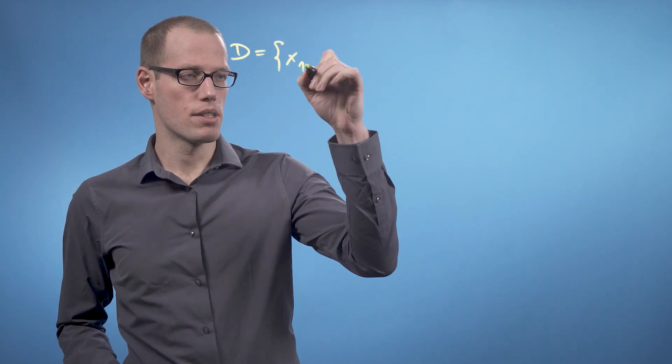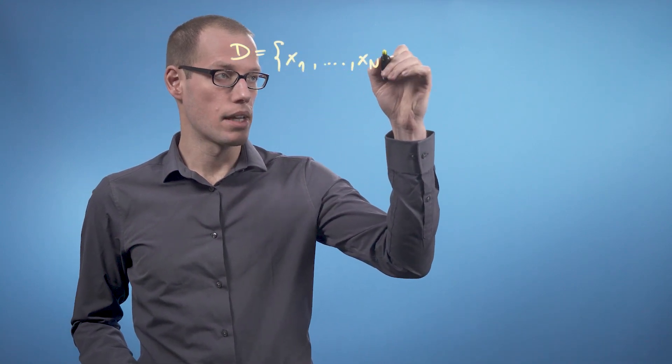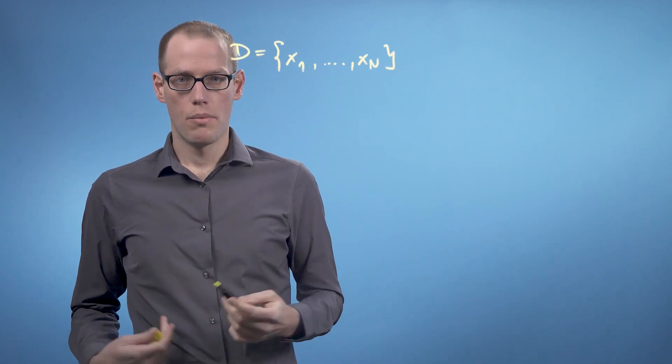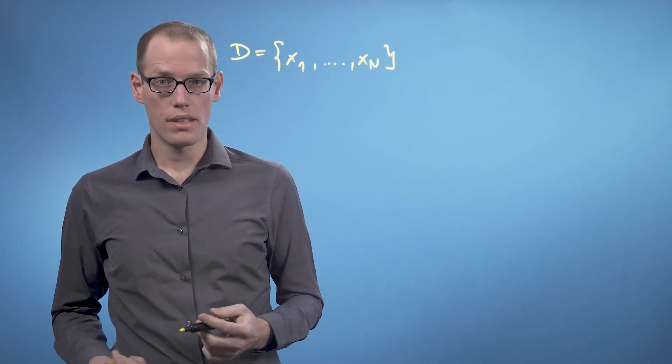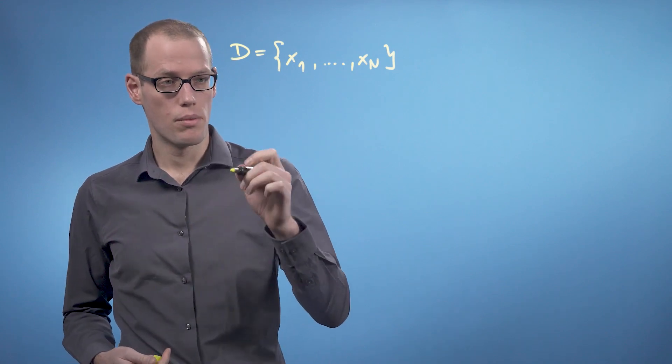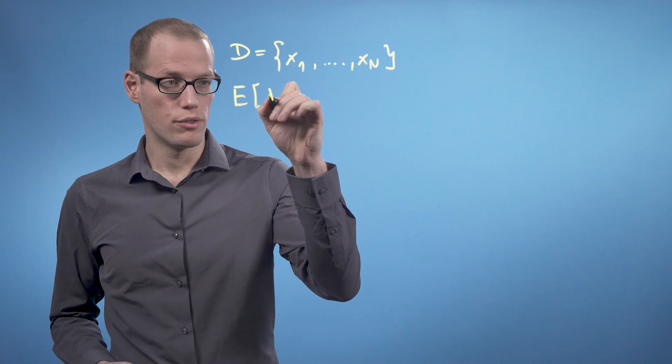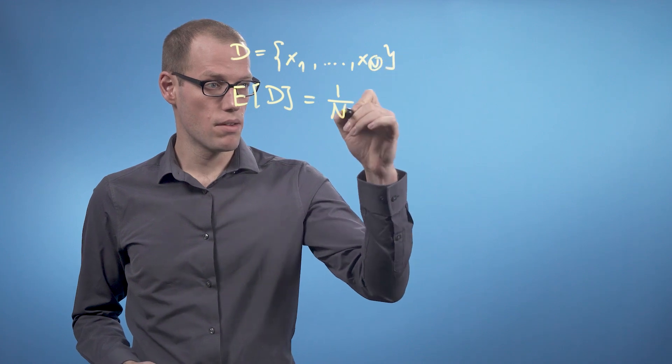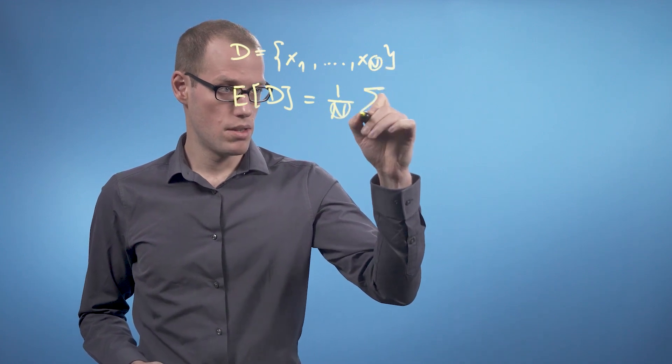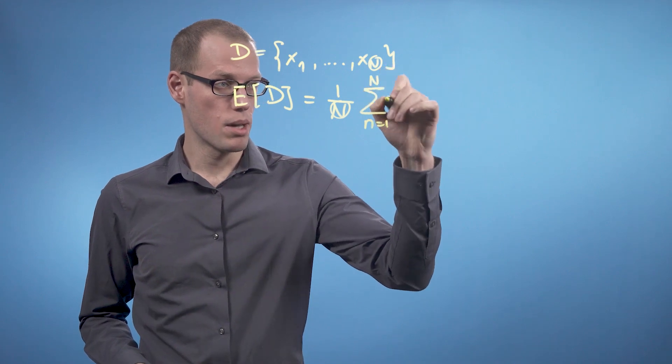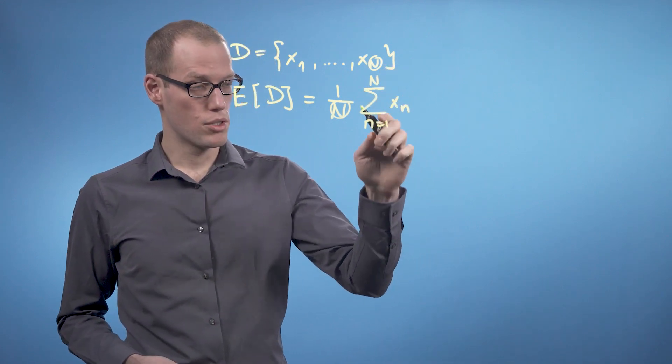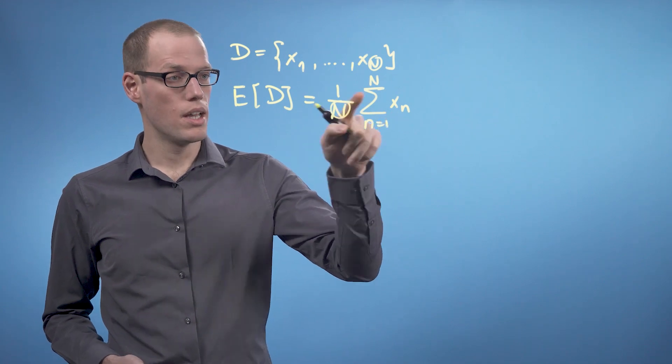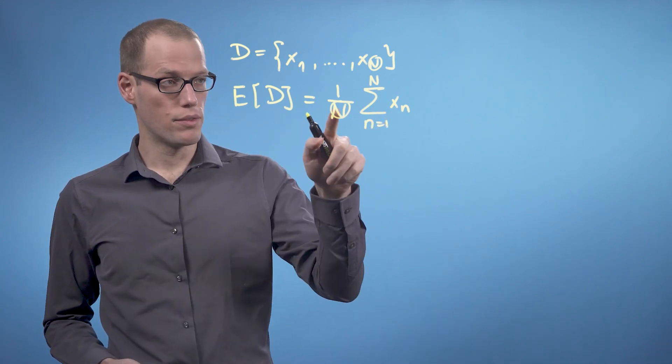Generally, if we have a dataset x1 to xn, let's say D consists of data points x1 to xn, we get the mean value or the expected value of this dataset as follows. We write the expected value of D is 1 over the number of data points, so this is n, times the sum n equals 1 to capital N of xn. So we sum up all data points in our dataset and divide by the number of data points that we have.